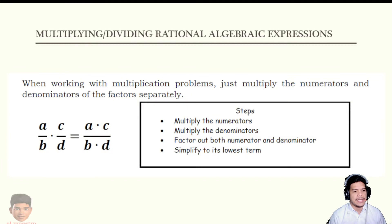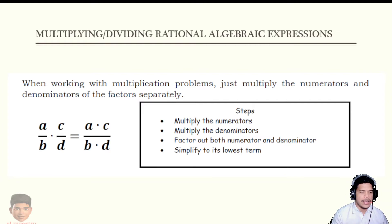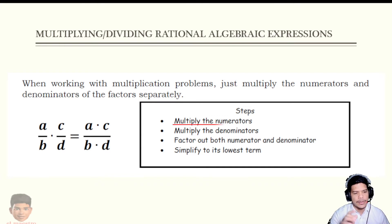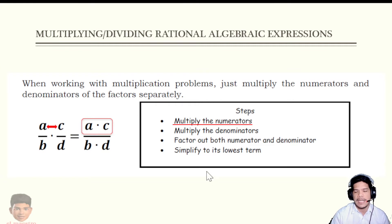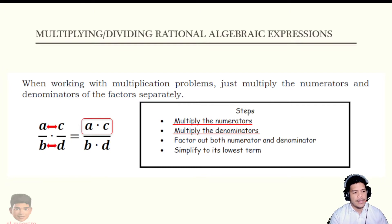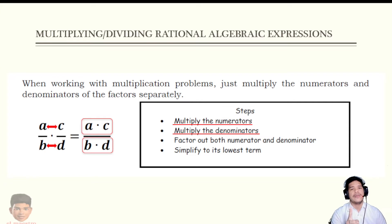So first we'll tackle multiplying rational algebraic expressions. These are the rules we need to remember. When working on multiplying rational algebraic expressions, first rule: we have to multiply the numerators, so we get A times C. Rule number two: we have to multiply the denominators, so we get B times D. So multiply numerator to numerator, denominator to denominator.